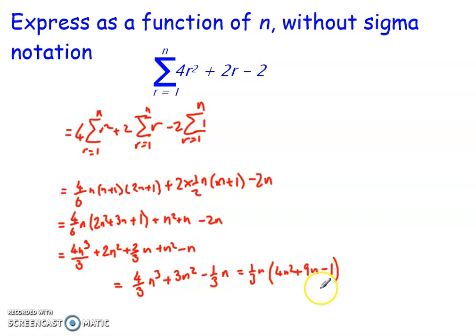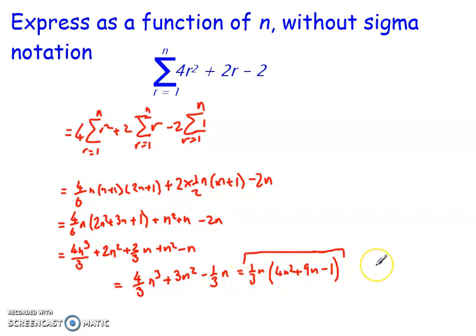Taking out a common factor of (1/3)n gives (1/3)n(4n² + 9n − 1). Checking whether the quadratic factorizes further: the discriminant b² − 4ac is negative, so it cannot be factorized. This result means that if given an upper limit, say n = 10, you simply substitute it in to get the exact value — avoiding the need to calculate every individual term.